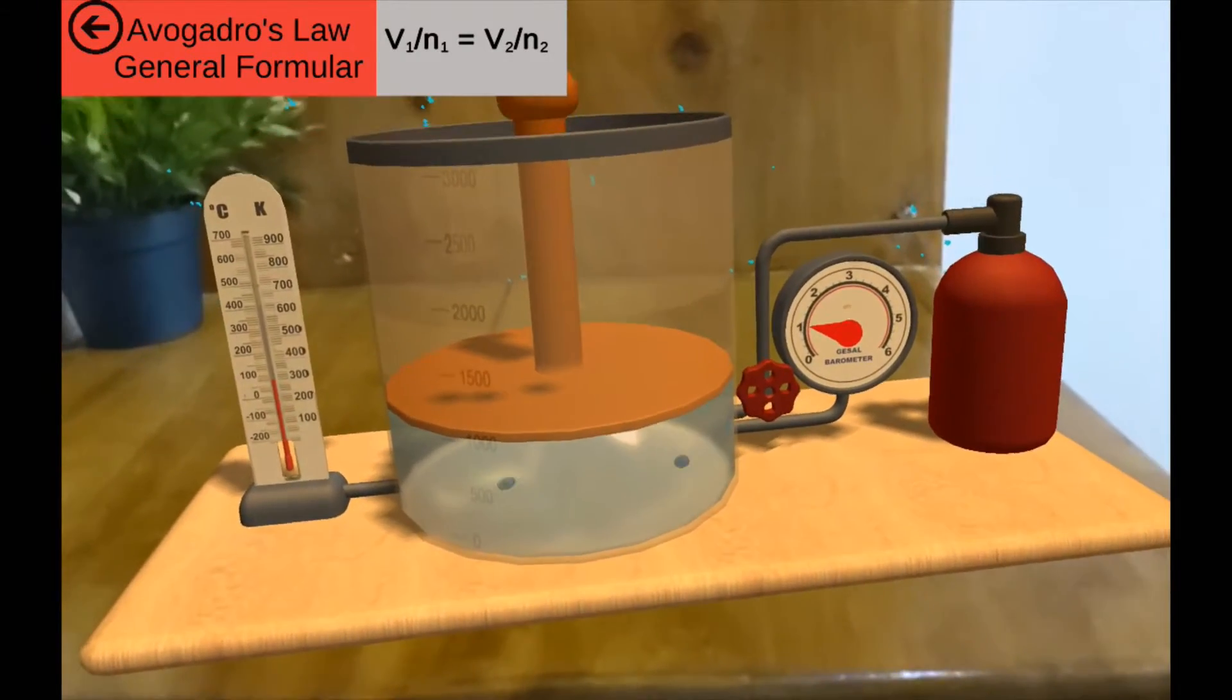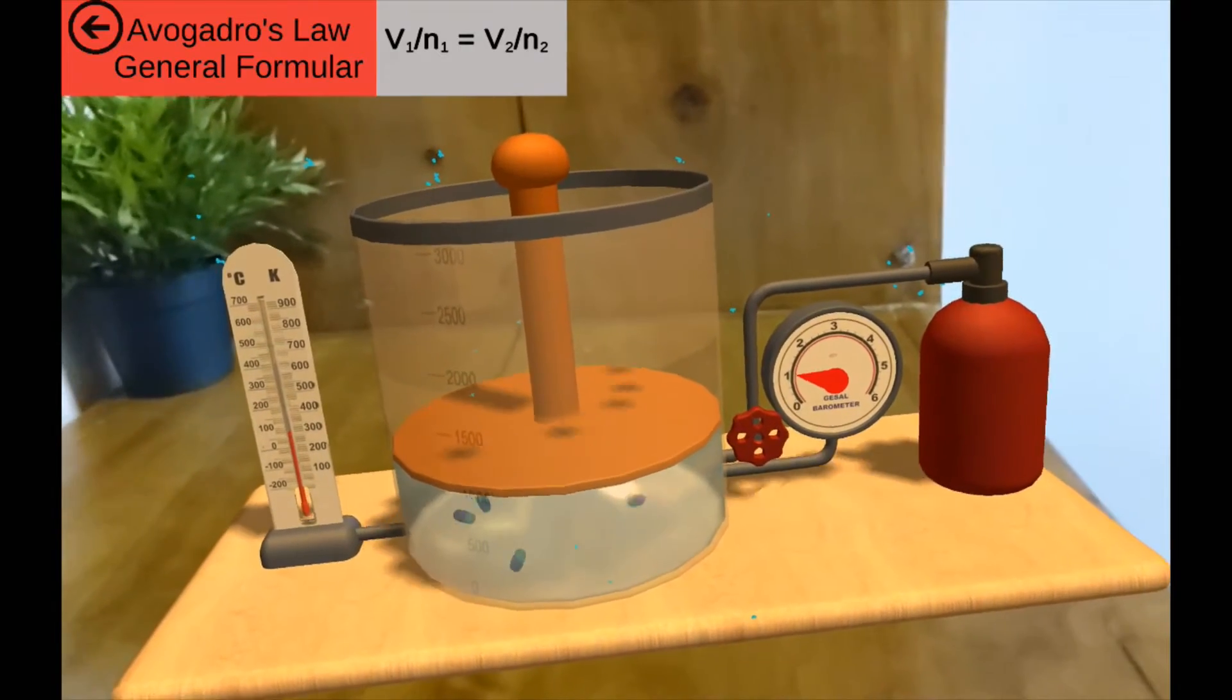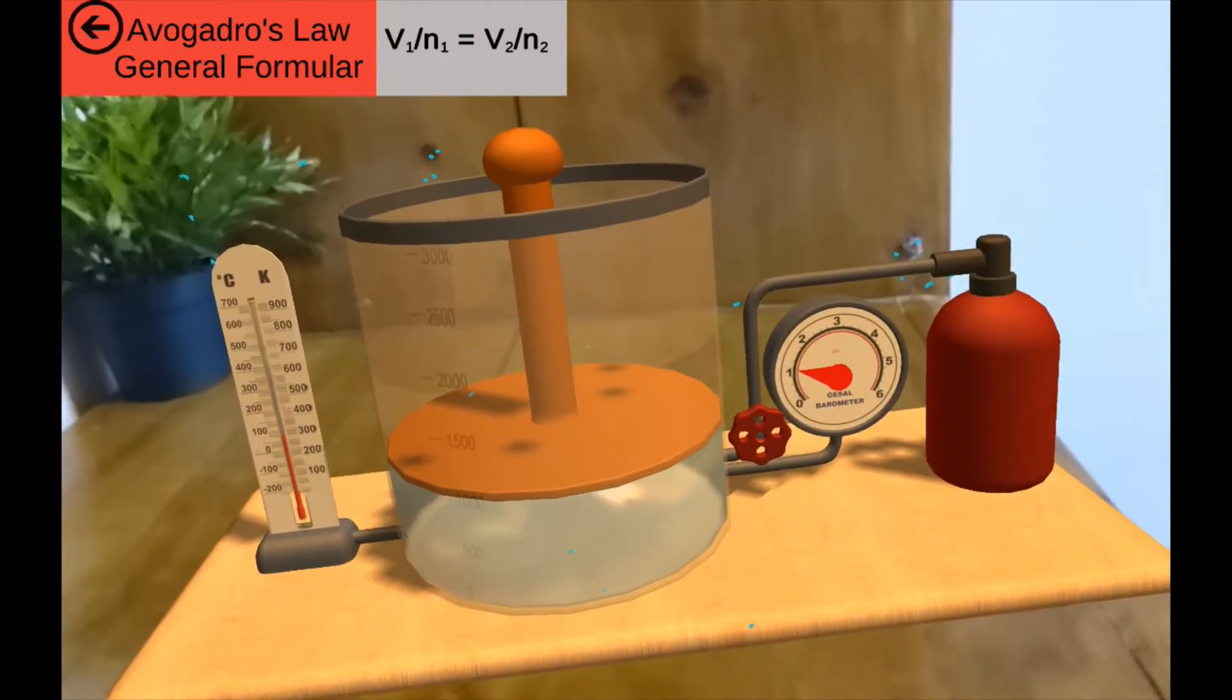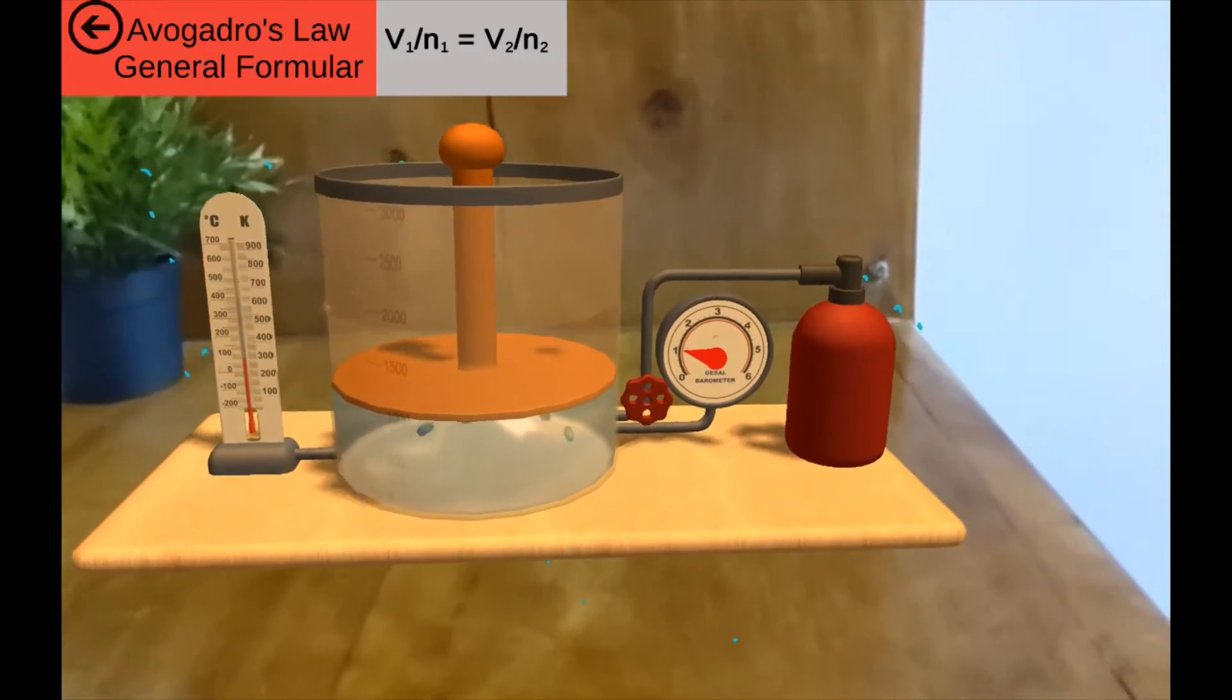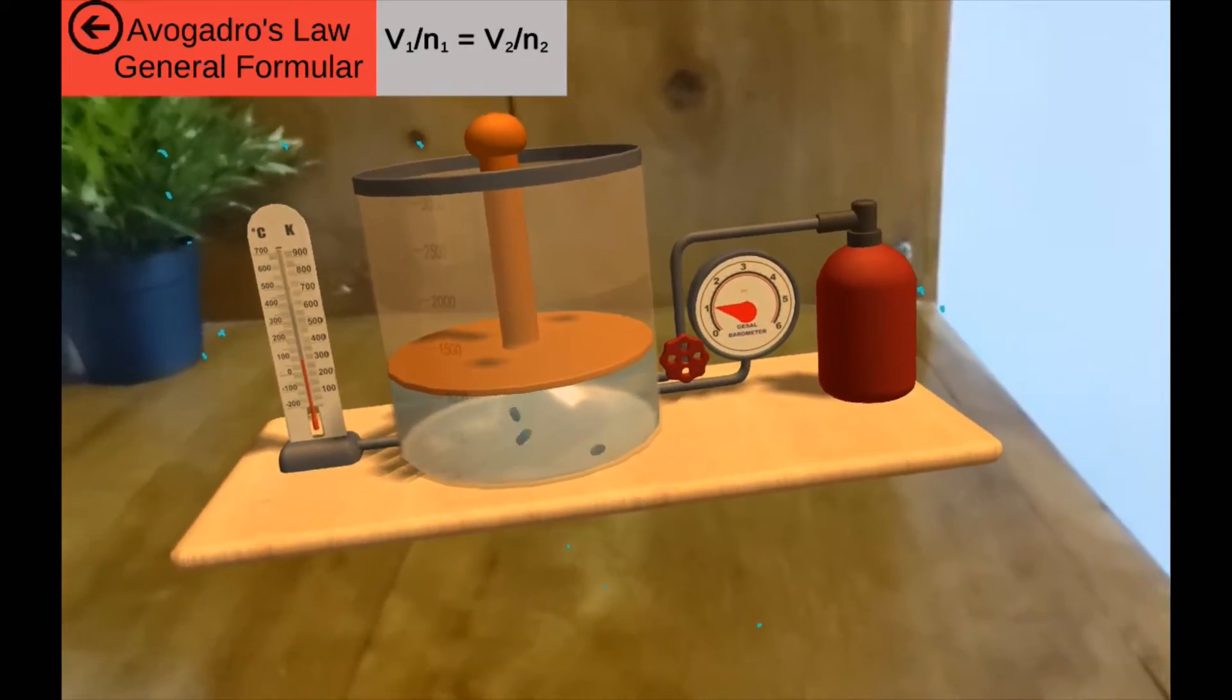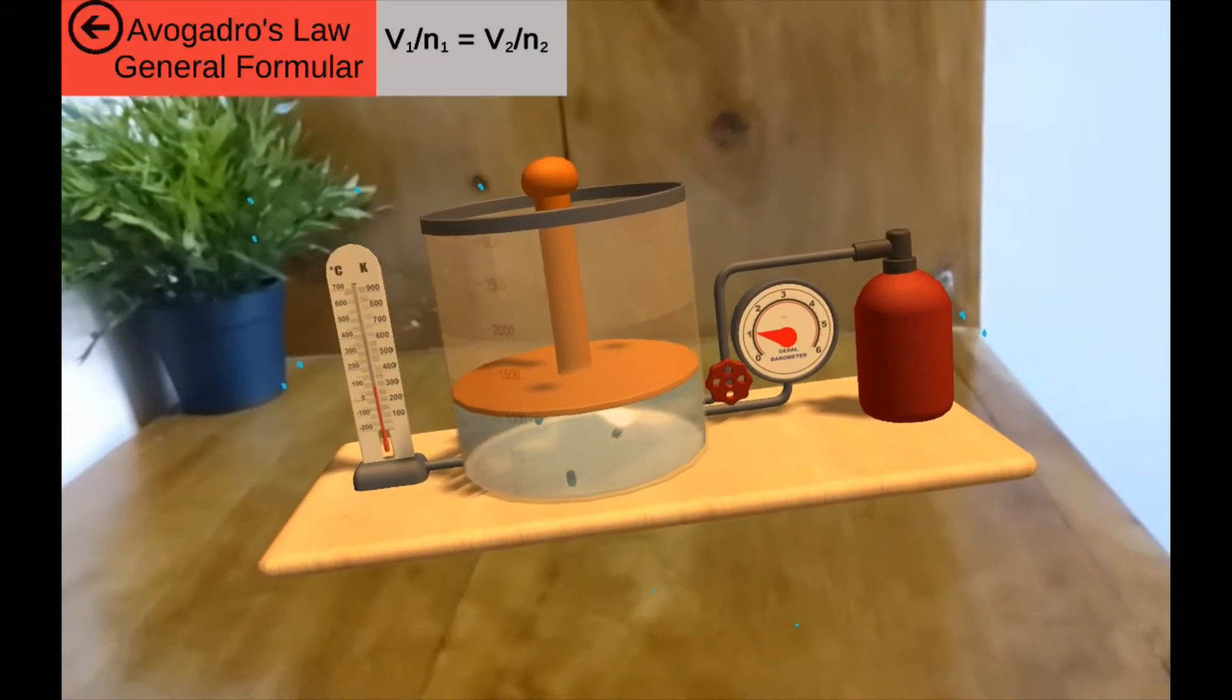Well, so far you've learned about gas laws and you will have noticed that we always have one thing constant at a point. So now you may be wondering what else. Here in Avogadro's law we're holding two things constant.